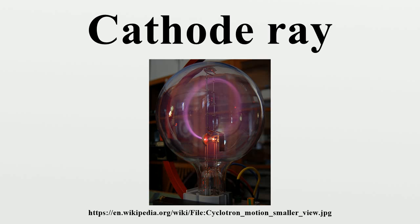At this time, atoms were the smallest particles known and were believed to be indivisible, and what carried electric currents was a mystery. During the last quarter of the 19th century, many experiments were done to determine what cathode rays were. There were two theories: Crookes and Arthur Schuster believed they were particles of radiant matter — electrically charged atoms. German scientists Eilhard Wiedemann, Heinrich Hertz, and Goldstein believed they were ether waves, a new form of electromagnetic radiation, separate from what carried the electric current through the tube.